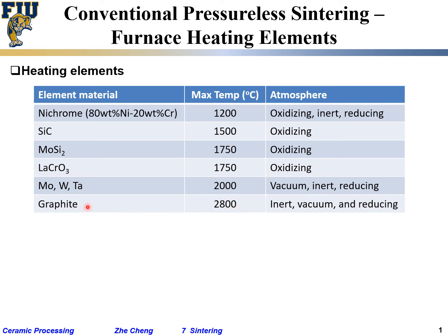Graphite can be used in inert atmosphere, but at very high temperatures it cannot be used even in a reducing atmosphere, because hydrogen would combine with carbon and carry it away. At high temperatures, graphite is only suitable for vacuum or inert atmosphere.